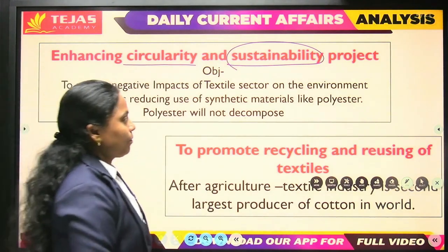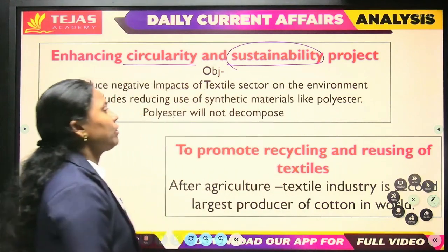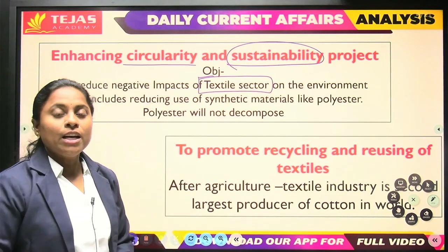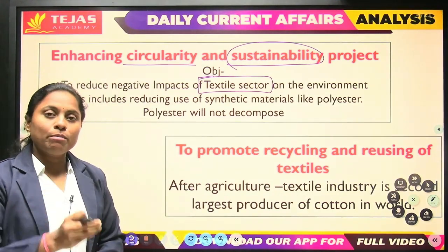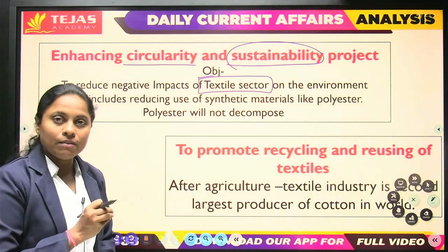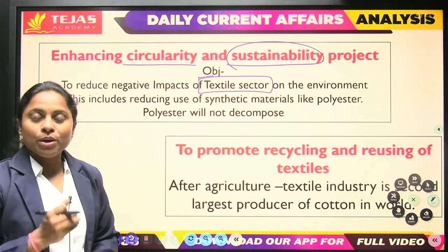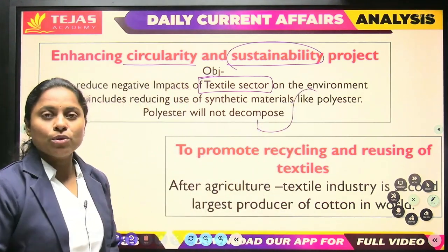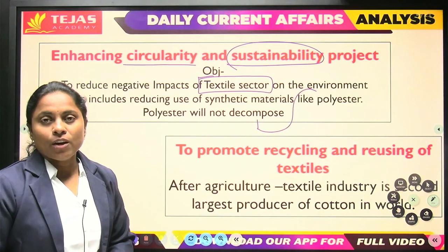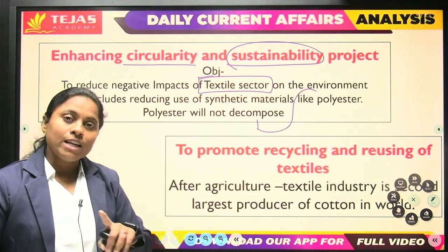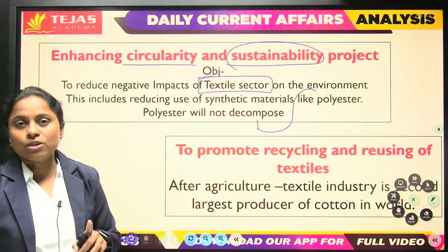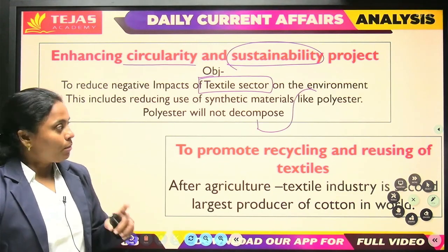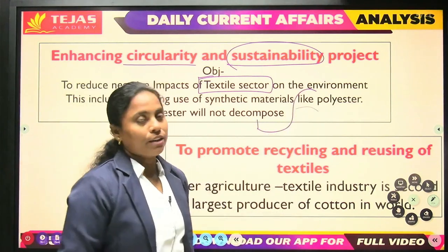Now, this sustainability project is about the textile sector. The textile sector has a very negative impact on the environment, especially when textiles are made up of synthetic polyester materials. Synthetic polyester materials do not decompose easily, and anything which does not decompose will stay on the earth and pollute the soil, the environment, and ultimately cause damage to human survival. Similarly, textiles like polyesters show a very bad effect on the environment.